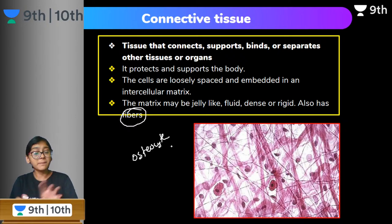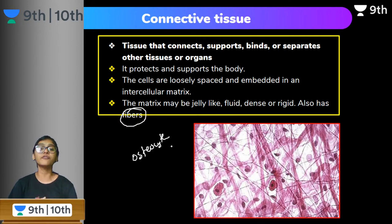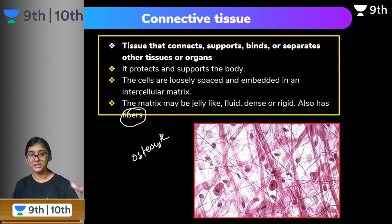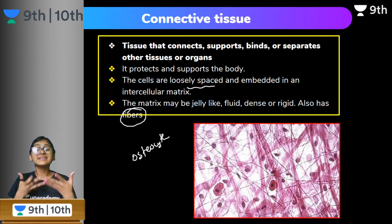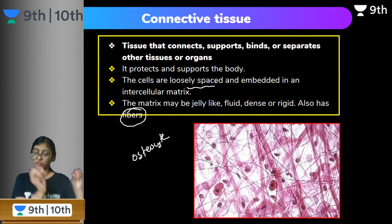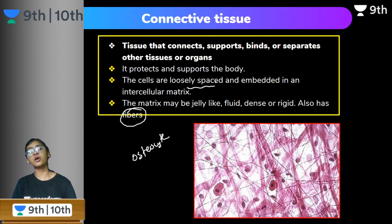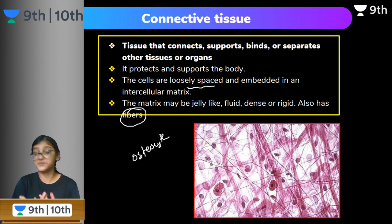Depending on the location and type of connective tissue, you see a diversity of cells. The empty opaque spaces you see are nothing but the matrix, also simply referred to as ground substance. Cells are loosely spaced and embedded in an intercellular matrix — the space of the connective tissue. This matrix will be either fluid, semi-fluid, or solid, and based on that we can divide the types of connective tissues.